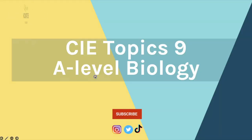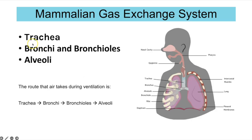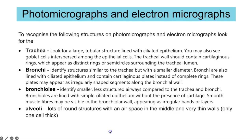CIE Topic 9: Gas Exchange. For the mammalian gas exchange system you need to know the key structures: the trachea, bronchi, bronchioles, and the alveoli. The route that air takes during ventilation is it will be inhaled through the nasal cavity or mouth, then it passes down the trachea which is the windpipe, it then splits between the two bronchi, branches into multiple smaller bronchioles, and then reaches the alveoli — the air sacs at the end.